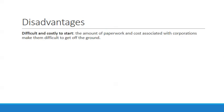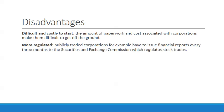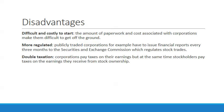Disadvantages of corporations: they're difficult and costly to start — the amount of paperwork and costs are huge because they're treated as individuals under the 14th Amendment. They're highly regulated — publicly traded corporations must issue financial reports every three months. The Securities and Exchange Commission regulates stock trades and scrutinizes corporations legally. There's also double taxation: corporations pay taxes on their earnings, and stockholders also pay taxes on the earnings they receive from stock ownership.